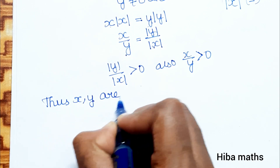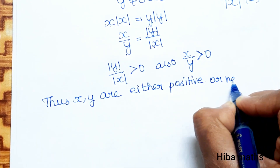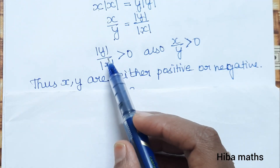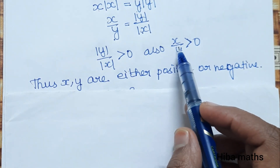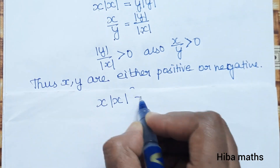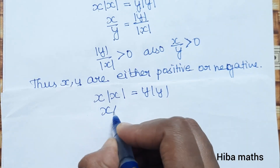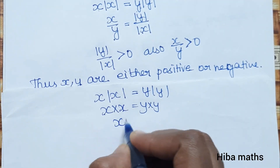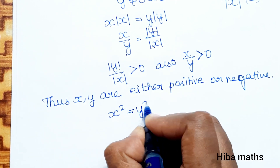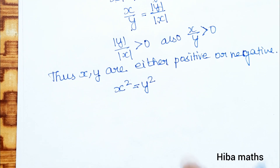x and y are either both positive or both negative. Now solving this condition: x/|x| = y/|y| gives x²= y². Since x and y have the same sign, squaring both positive and negative values gives a positive result. So x² = y² under this condition.